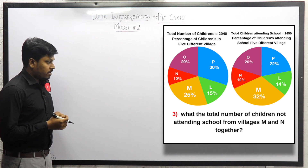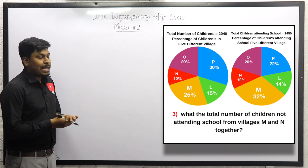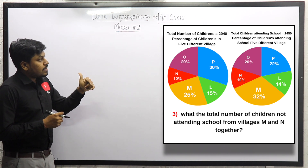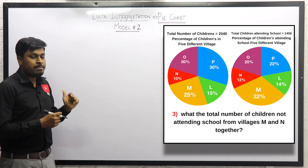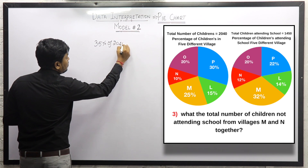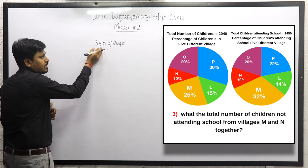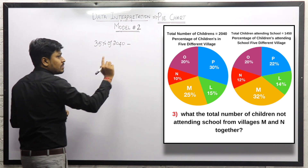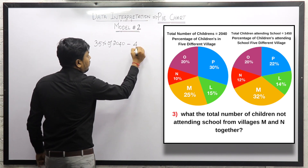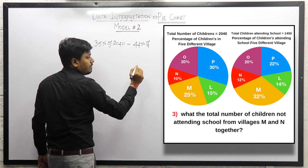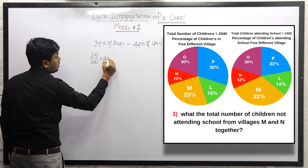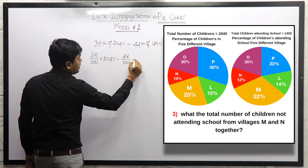Question number 3: What is the total number of children not attending school from village M and N together? Our target is children not attending from M and N. According to chart number 1, M is 25% and N is 10%, so together 35% of 2040. For children attending, M is 32% and N is 12%, so 44% of 1450. So: 35/100 × 2040 minus 44/100 × 1450.